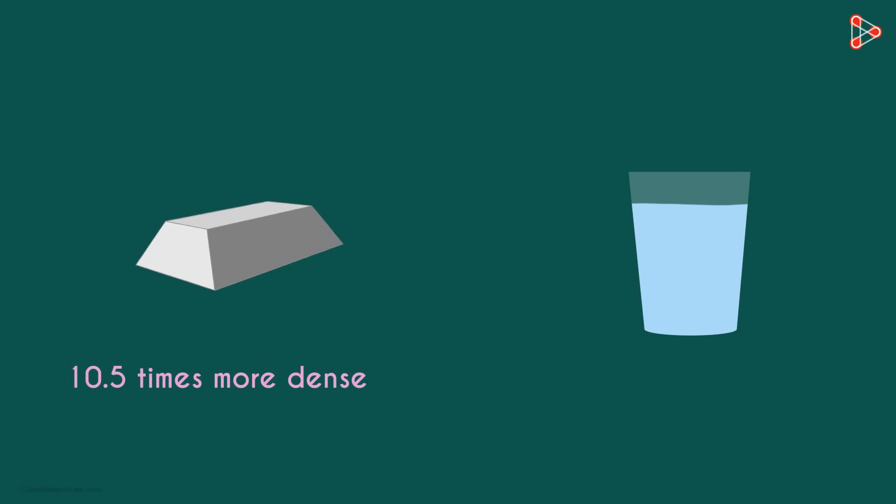What does the relative density tell us though? What can we understand from this? First, it tells us that silver is a lot more dense than water under the given conditions. Approximately 10.5 times denser. But that's pretty obvious given the numbers. This tells us another important thing.